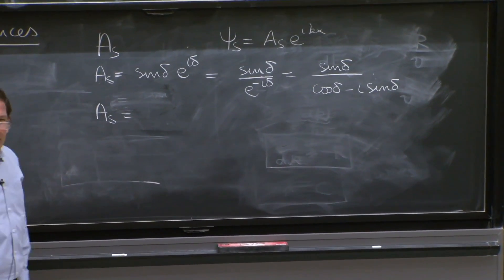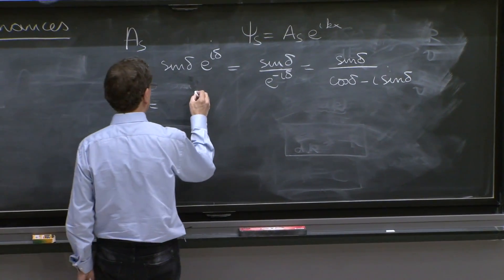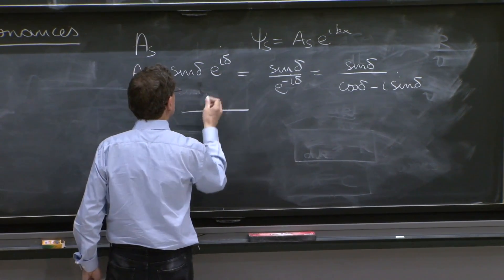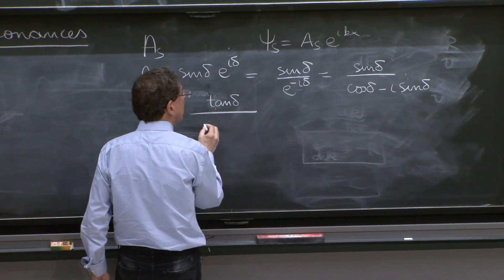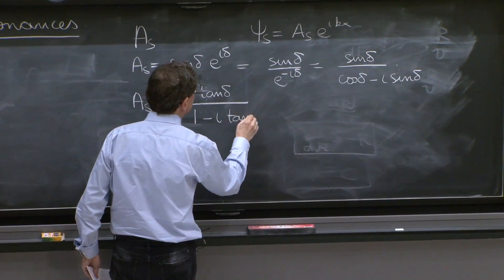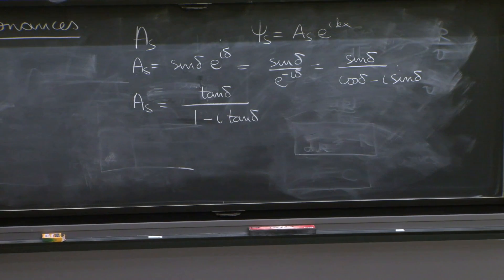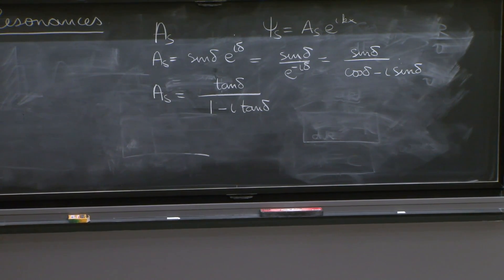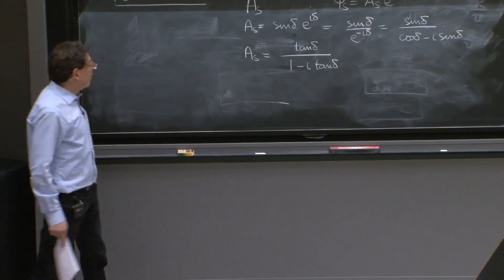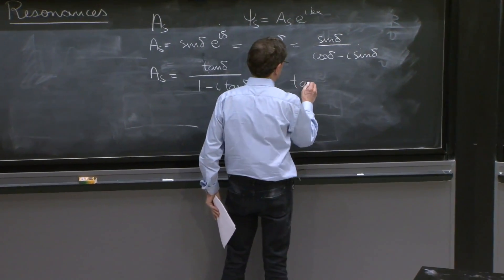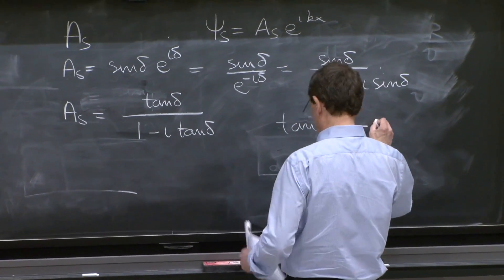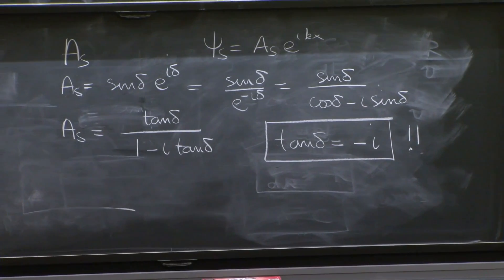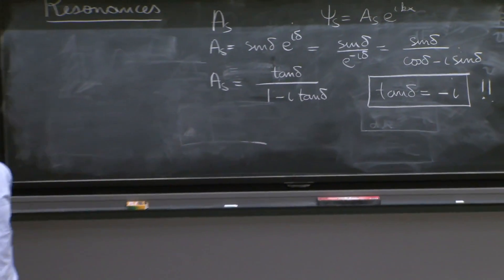As. Let me divide by sine delta both sides, both numerator and denominator. So, no, I divide by cosine delta. So I'll have tan delta over 1 minus i tan delta. So I divide it by cosine delta. OK. You want As large? You really want it large? Choose tan delta equals to minus i. Sounds crazy. It's not really crazy.